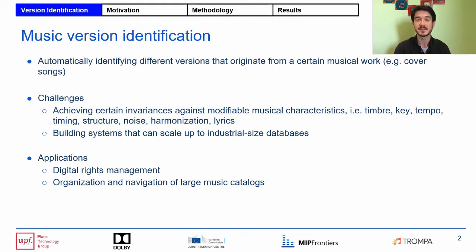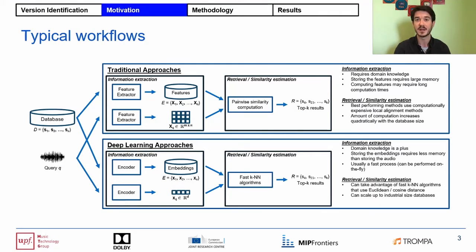Another big challenge is to build systems that can scale up to industrial-sized databases. Applications for such systems include digital rights management, for example for detecting copyright infringement cases, and organizing and navigating through large collections of music. We can see this task as a typical example of a music retrieval scenario where, given a query, we want to retrieve the most similar items from our database. The traditional approaches focus on feature extraction and post-processing steps to obtain representations that are invariant to changes in musical characteristics, and the best performing ones use local alignment methods to estimate pairwise similarities between songs. The biggest setback of these approaches is that the computation time needed increases quadratically with the size of the features and the size of the database.